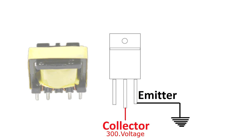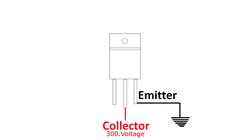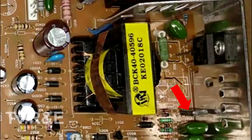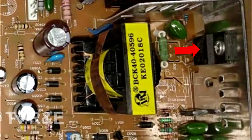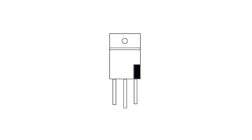और आखिर में तीन नंबर वाला terminal को हम base के नाम से जानते हैं। इस terminal में switching gate pulse input होता है। ये switching gate pulse, switching drive transistor से इस terminal में input होता है। ये switching transistor SMPS transformer को switching करता है।